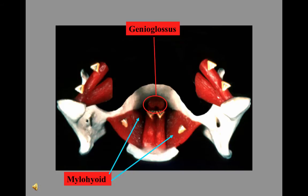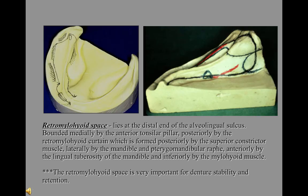Envision what the lingual flange of a mandibular denture would look like in relation to this muscle. The retromylohyoid space lies at the distal end of the alveolingual sulcus. It is important in the construction of the mandibular denture in that the denture must extend into this area. Because of the depression or slight undercut in that area, we can gain some retention for the mandibular denture by extending into it.